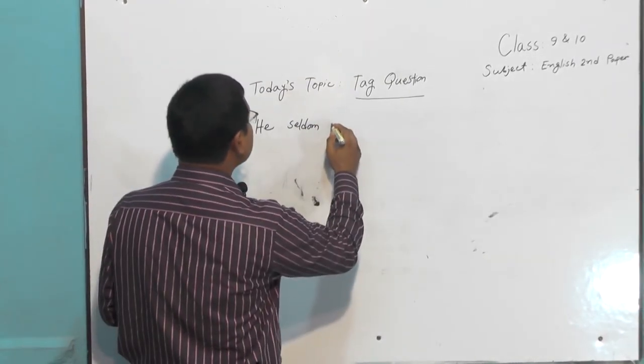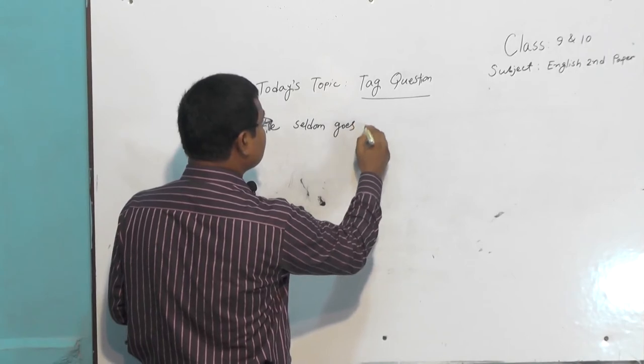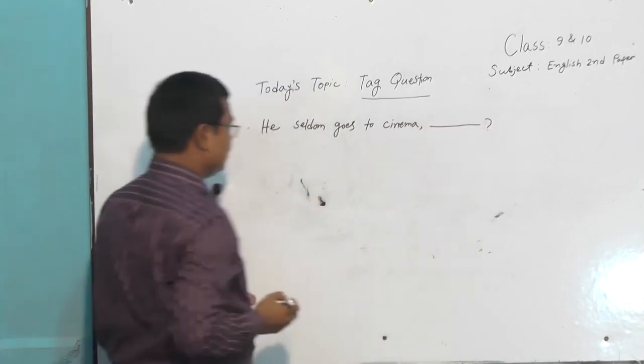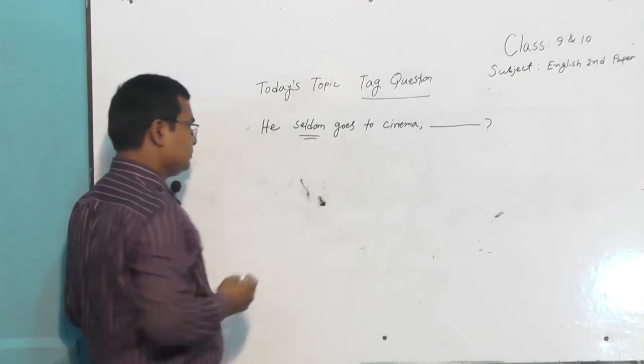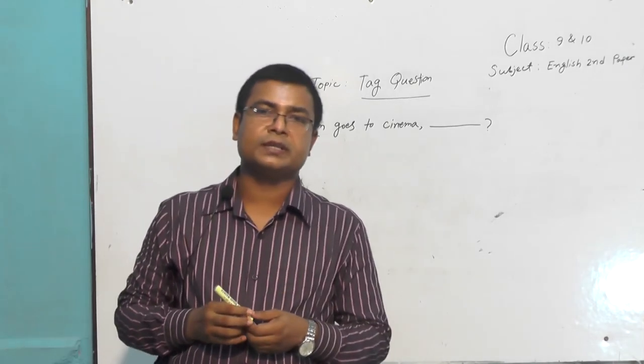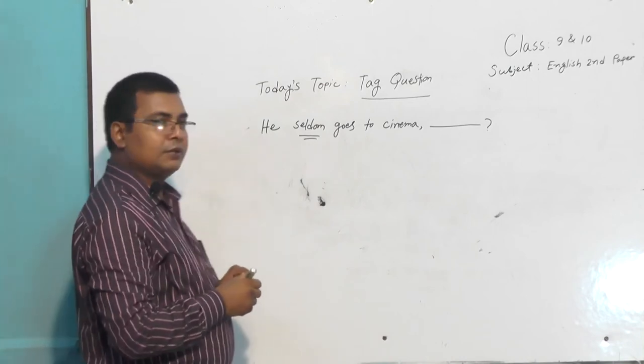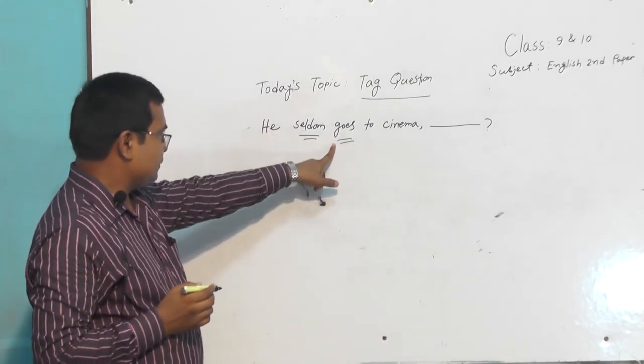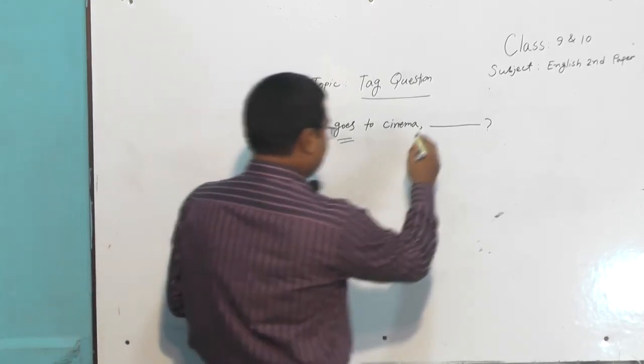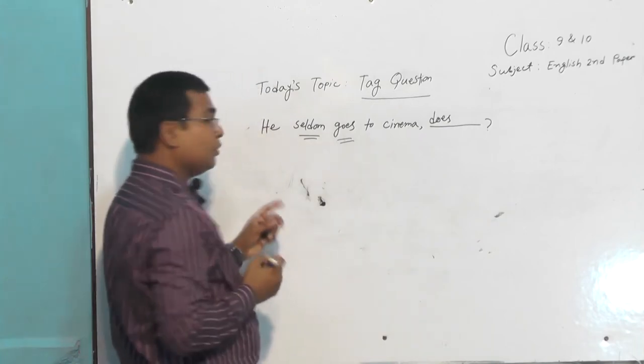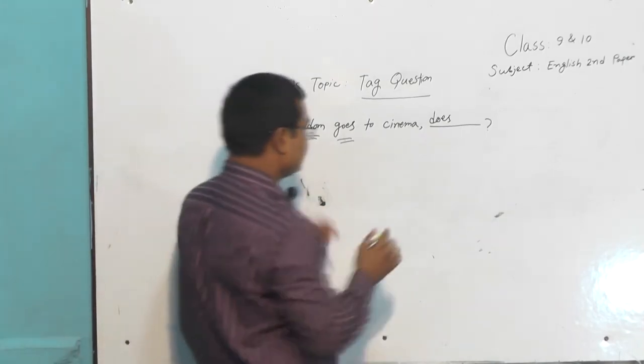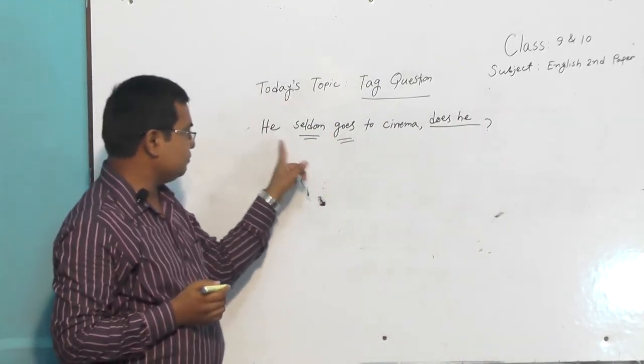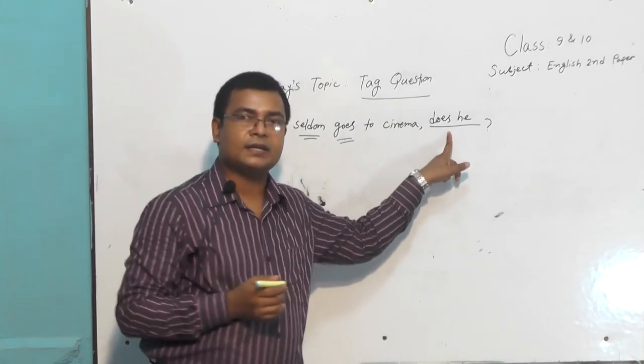Suppose: 'He seldom goes to cinema.' Here the word 'seldom' - if you find the word 'seldom' in the sentence, in case of tag question we will not use 'not'. So the tag question will be here. The verb is 'goes', so we will use auxiliary verb here: 'does', then 'not' will not be used because 'seldom' is present. 'Does' then the subject here: 'he'. So 'he seldom goes to cinema' - the question is 'does he'.